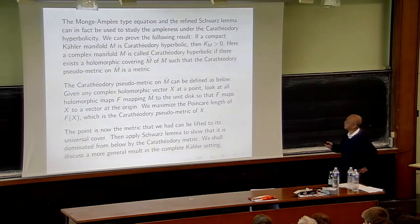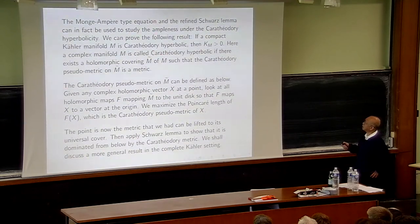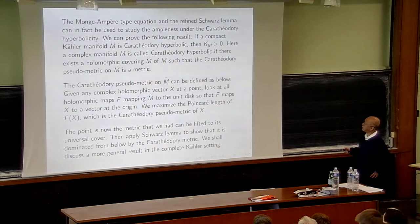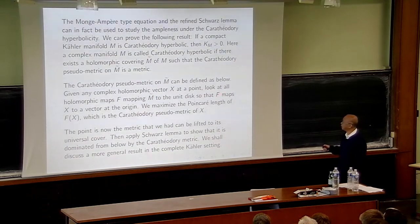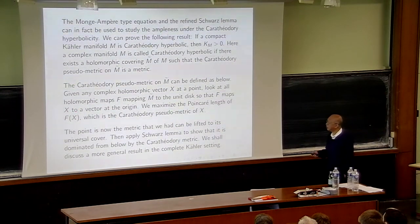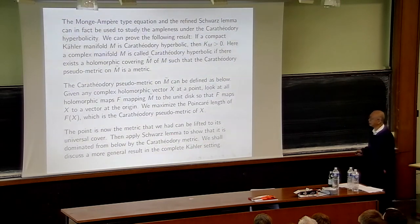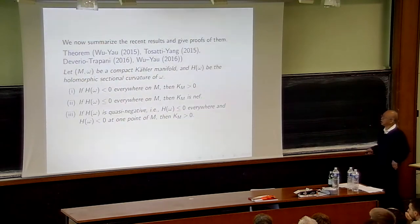One can also use this to prove the canonical line bundle is ample assuming Kobayashi hyperbolicity — this is straightforward from the Schwarz Lemma. Kobayashi hyperbolicity here is stronger than the usual notion, because one gets a bound on holomorphic functions on the universal cover. Mapping the universal cover into the unit disk so the holomorphic map carries a tangent vector to a vector at the origin, and maximizing the Poincaré length of the image, gives what is called the Carathéodory pseudometric, and applying the Schwarz Lemma yields a complete Kähler-Einstein metric.